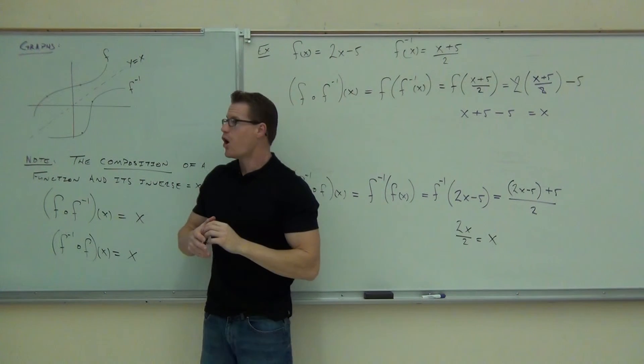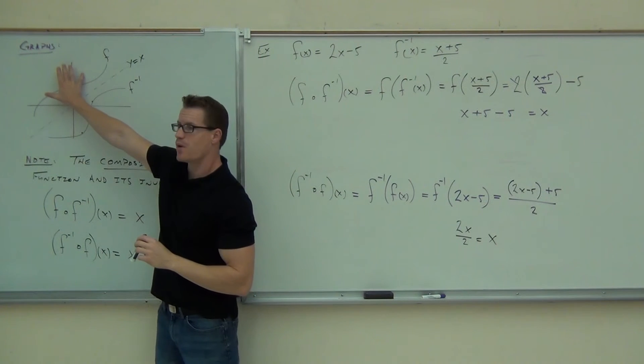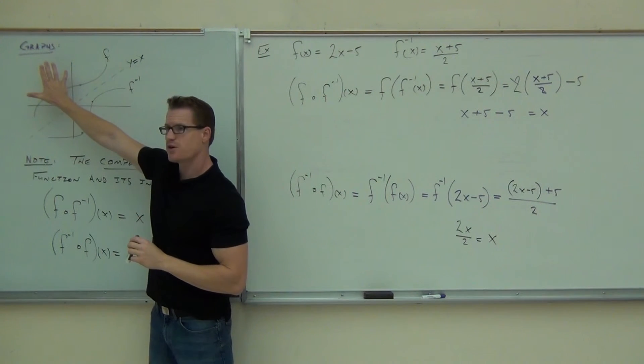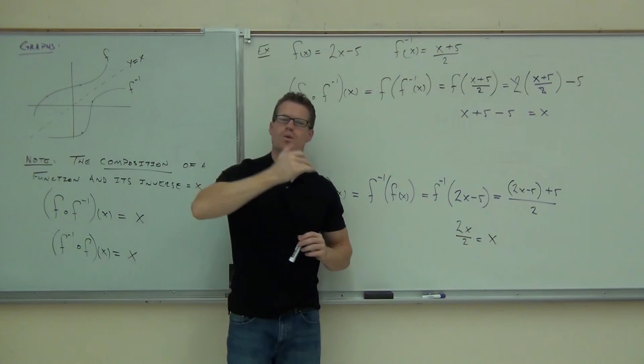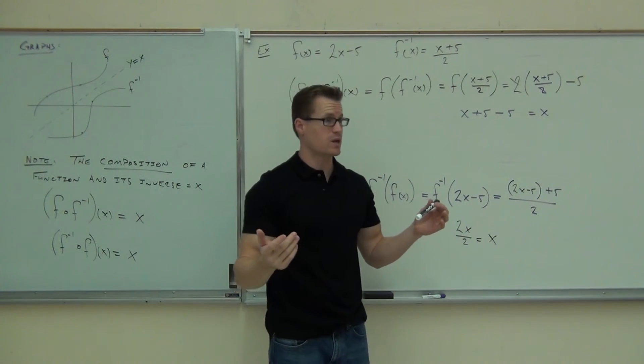Also, you should know that graphically, all that's happening when I'm flipping my x's and my y's, when I find my inverse, is taking this function and reflecting it across a diagonal line that's y equals x. That's the second thing. Are you guys okay with that?